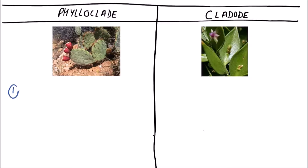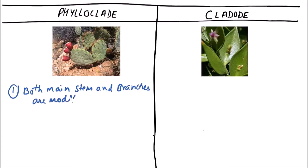We are observing a phylloclade in the given diagram. In a phylloclade, both the main stem and branches are modified into leaves.